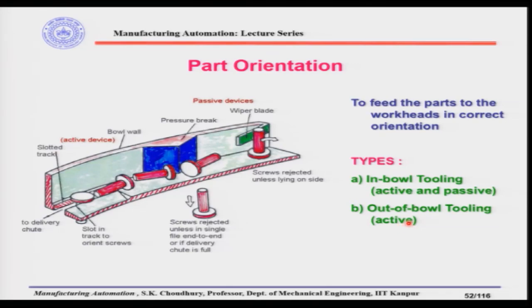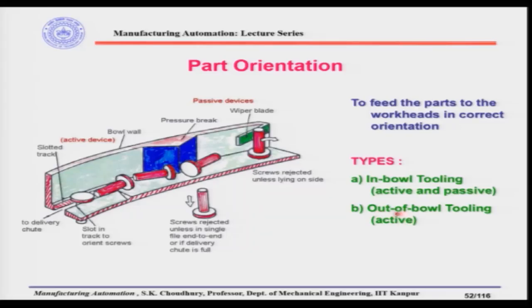In out-of-bowl tooling there is no scope for parts to be rejected, because the parts are already outside the bowl. Therefore, only active orienting devices are used as out-of-bowl tooling, located outside the bowl. Here is a diagram showing different kinds of part orienting devices. Let us say this is a sector of a vibratory bowl feeder, with the wall and the track of the vibratory bowl feeder shown.